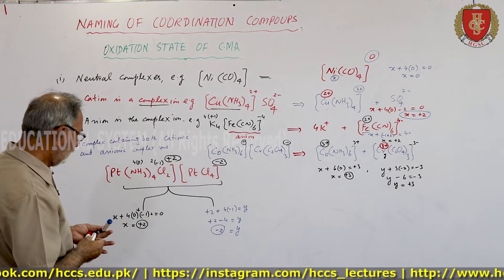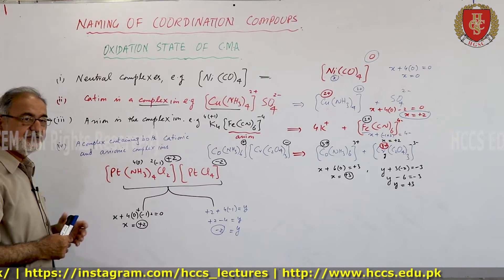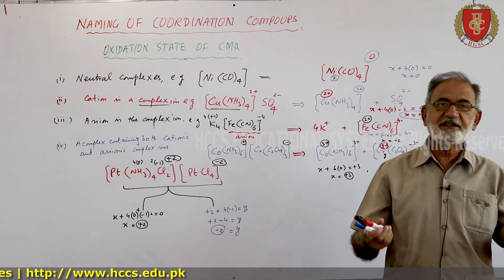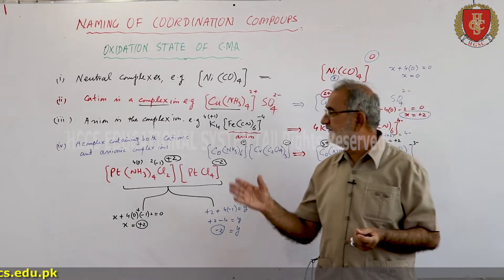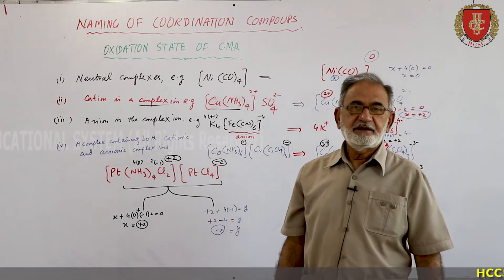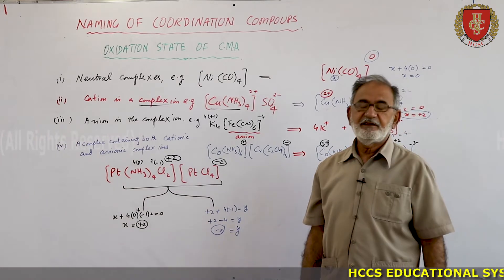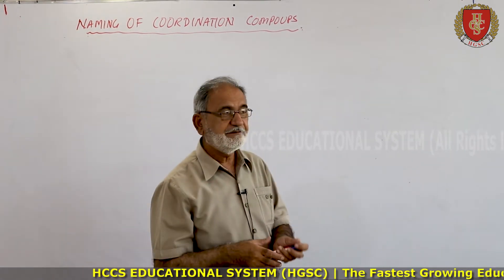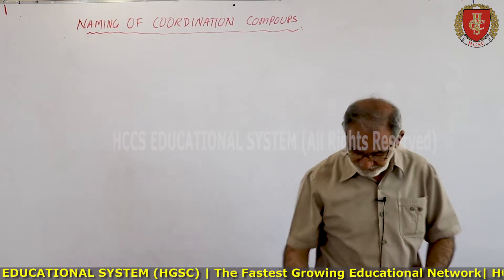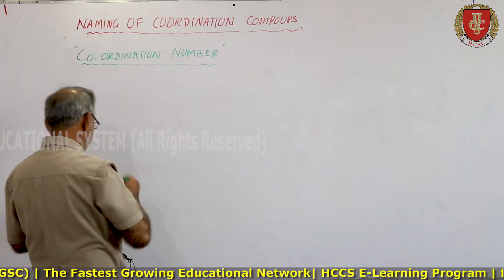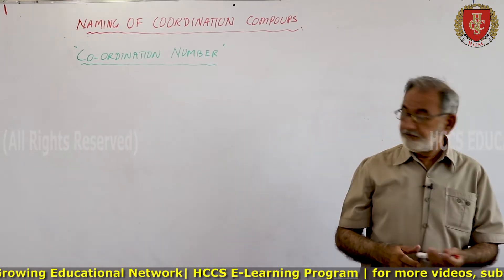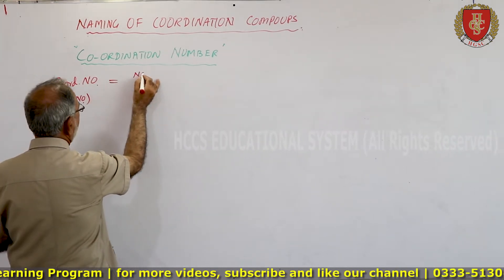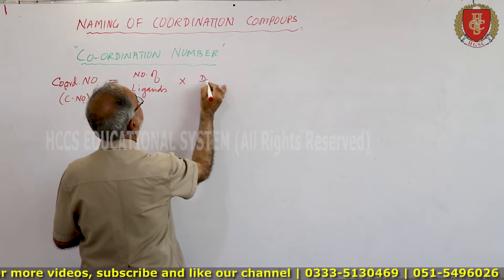We can find the oxidation state of different complexes whether they are neutral, cationic, anionic, or mixed. Another very important factor is how to find the coordination number in complexes. In general, the coordination number equals the number of ligands multiplied by their denticity.